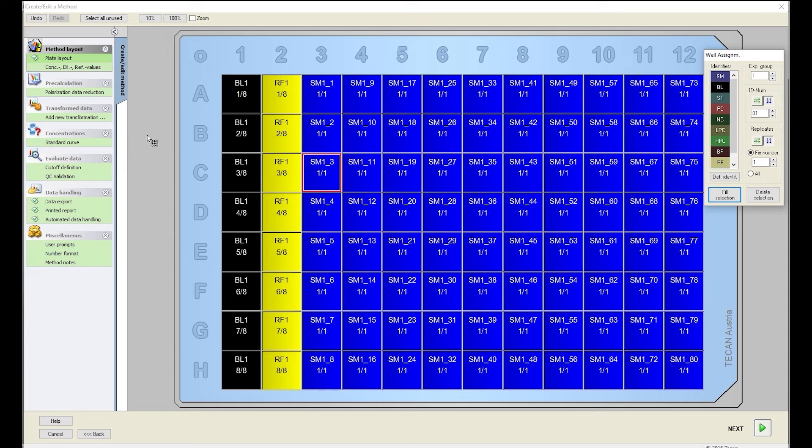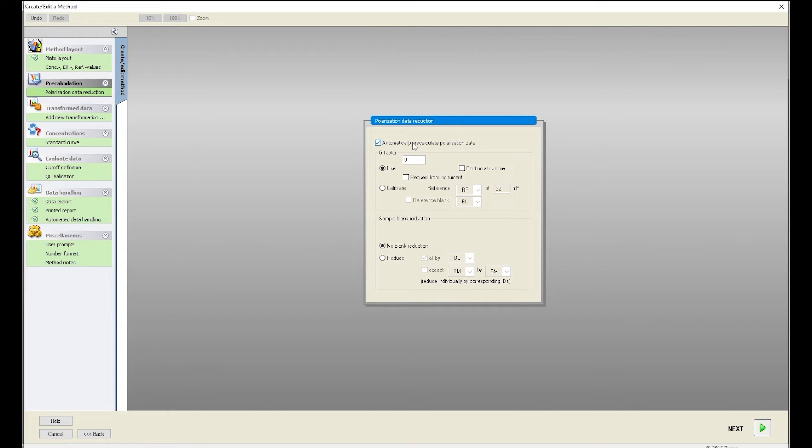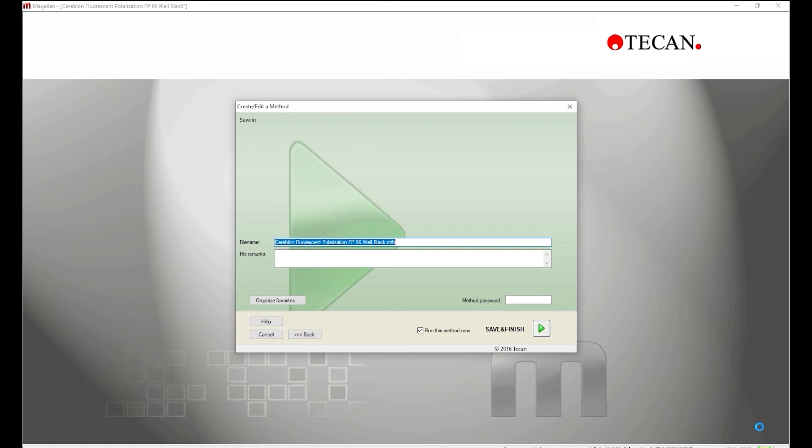Select Automatically Pre-Calculate Polarization Data. Select Calibrate. Reference is notated as RF. Set MP values to 22. Under Sample Blank Reduction, select Reduce and All by BL. Your pre-calculation setup is complete. Select Next.